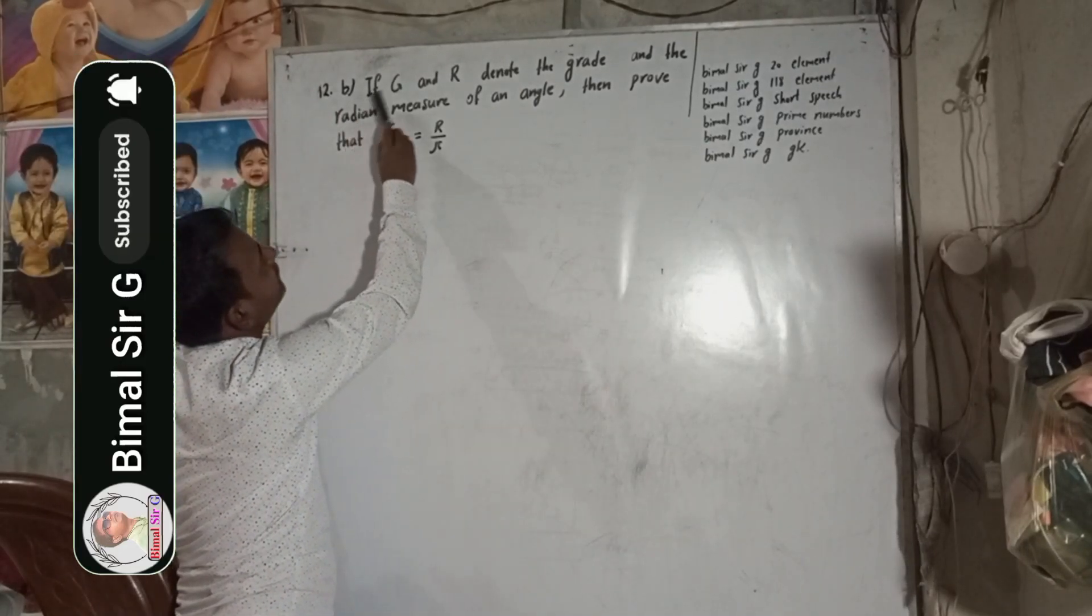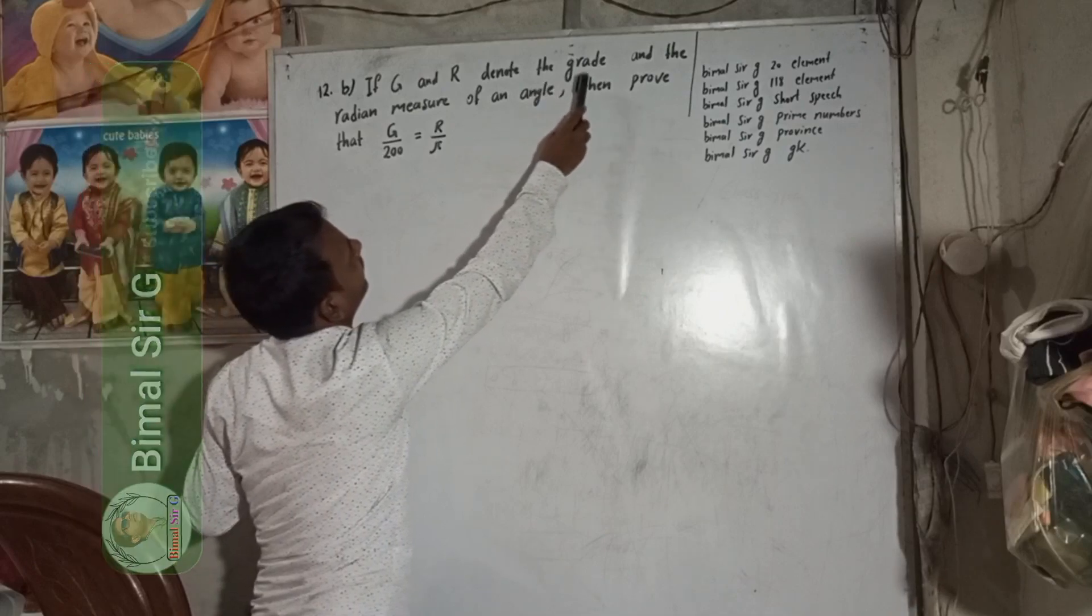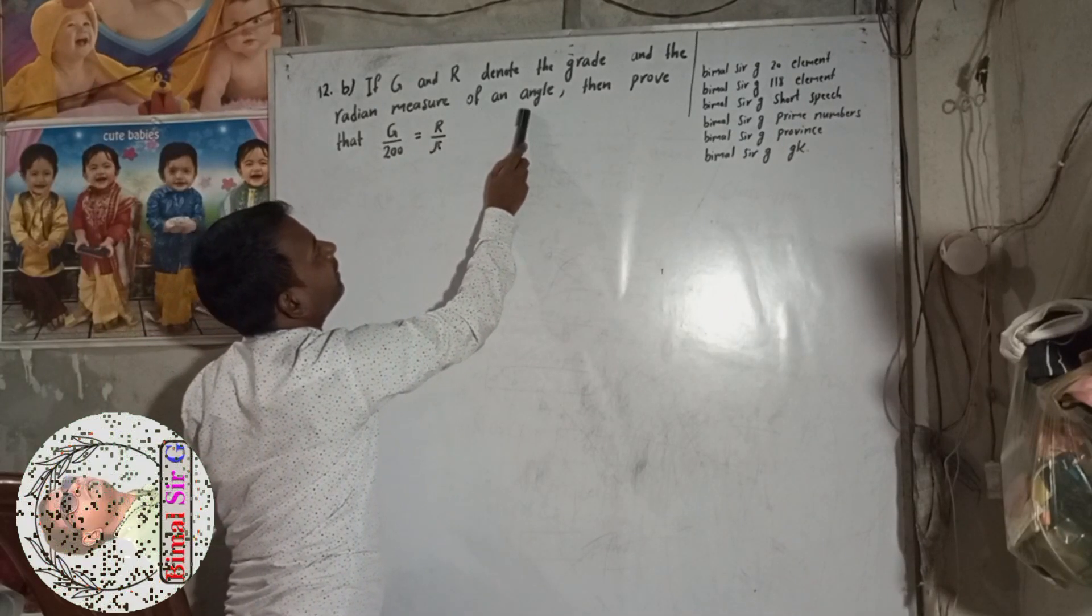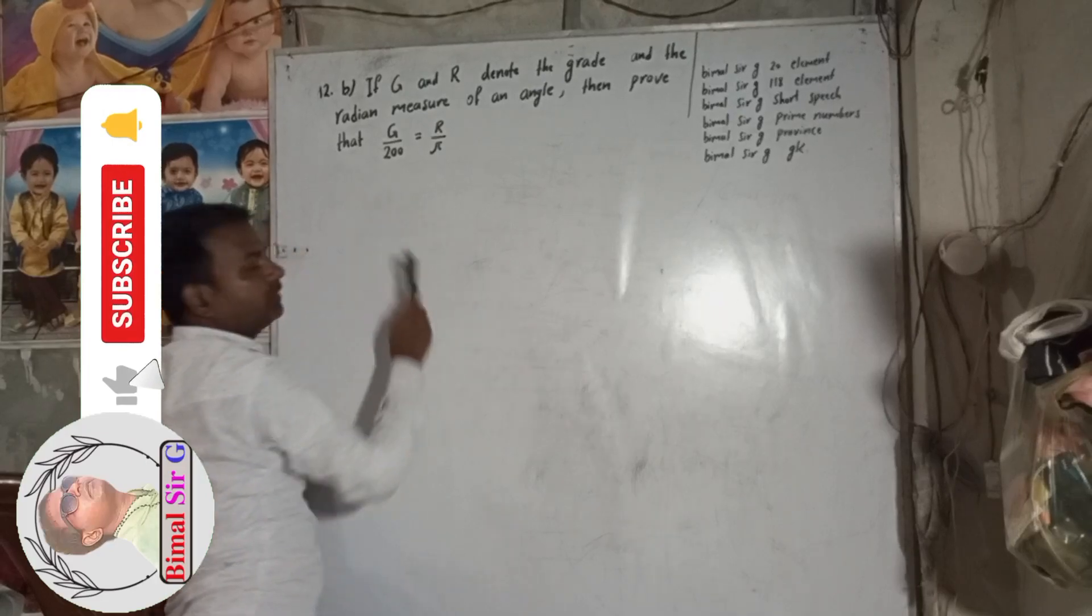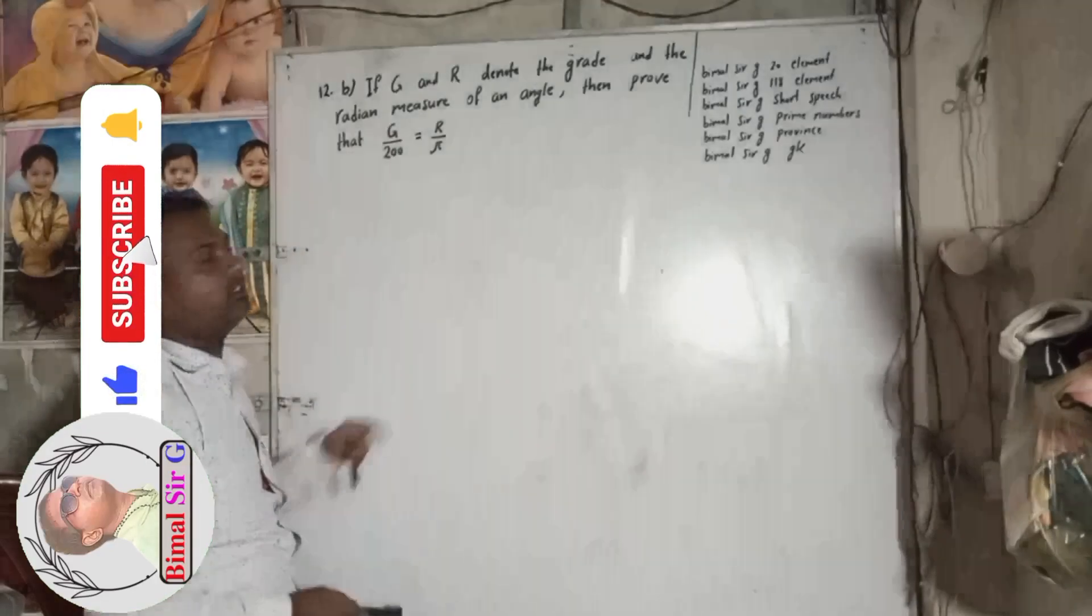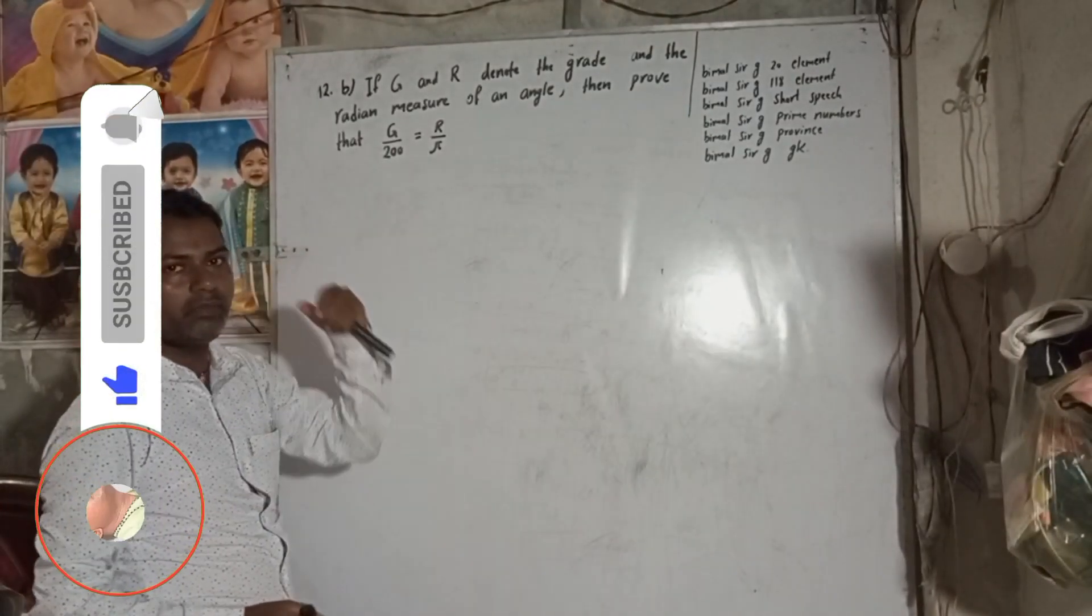If G and R denote the grade and the radian measure of an angle, then prove that G by 200 is equal to R by pi.